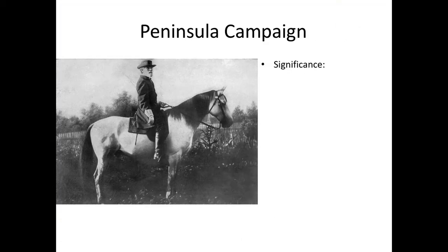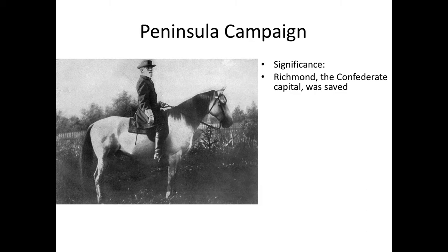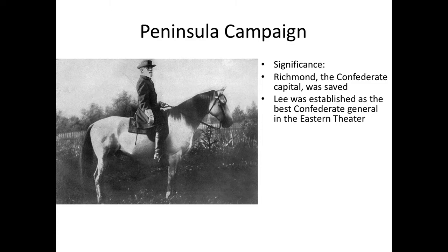Lee is a very smart general who knew what tactics to use and when. He knew he did not need an all-out battlefield victory — he just needed to inflict enough damage that McClellan wouldn't have the stomach to keep fighting. McClellan at this point probably could have defeated Lee, taken Richmond, and maybe ended the war, but because Lee did enough damage he essentially freaked McClellan out enough that McClellan retreated without accomplishing much. The significance is that Richmond — the Confederate capital — is saved, at least for now.